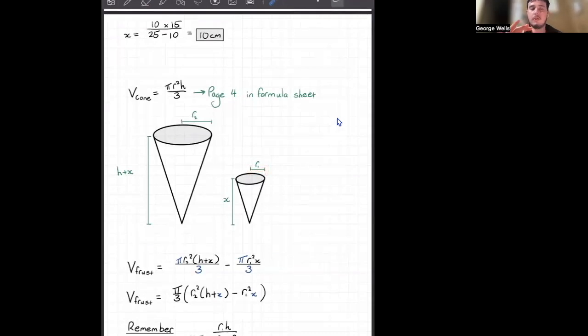So now all I'm doing for the volume of our frustum is just plugging these in to the volume of our cone. So we see here our r now becomes r2 and our h now becomes h plus x. And then for our little cone, our r becomes r1 and our height becomes x. All just based off that. Hopefully that didn't confuse you guys too much.